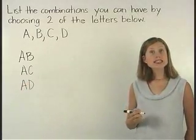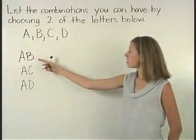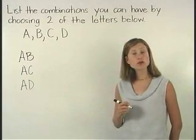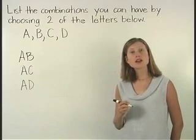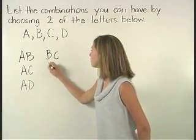Now let's list the combinations that begin with B. BA is the same as AB, so we don't need to include it. We also have BC and BD.